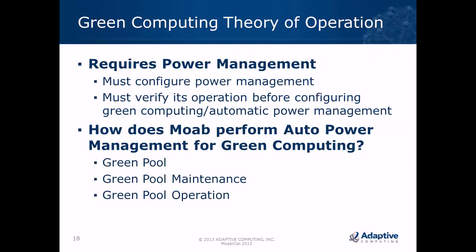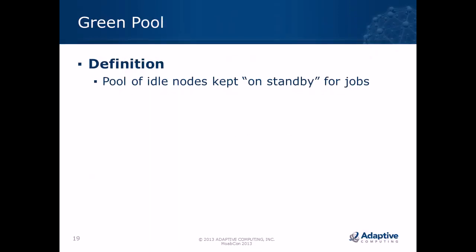Green computing for automatic power management has three components: the concept of a green pool, how the green pool is maintained and operates, and how Moab works with it. The green pool is a pool of idle nodes that are powered on but not running any workload — basically on standby for incoming jobs. This is for situations where the job queue is sometimes empty; if you never have an empty queue, you won't need green computing. The purpose is to balance starting a job quickly against saving power.